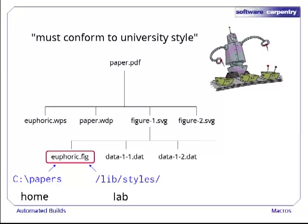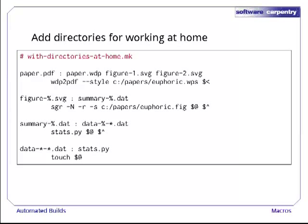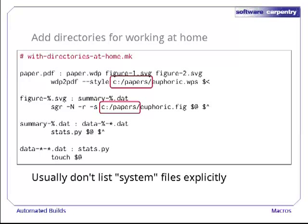How should we handle this difference? Let's start with the makefile we've written so far. The brute force approach is to just add the two new dependencies like this. As you can see, there's some redundancy here — we're specifying the same directory twice. Note that we haven't explicitly listed euphoric.wps or euphoric.fig as prerequisites, since it's more common not to list dependencies on system files that are only updated when new packages are installed.